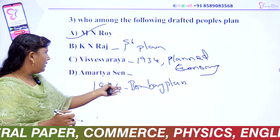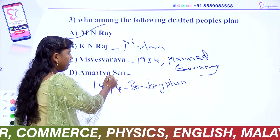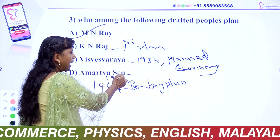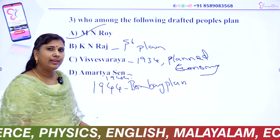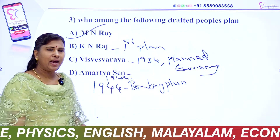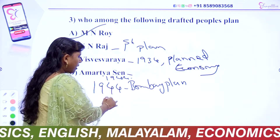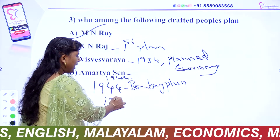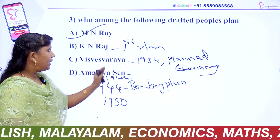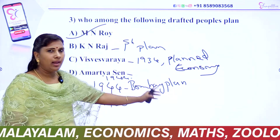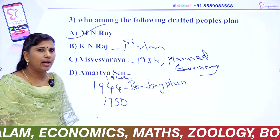The Bombay Plan is the idea of Narayan Agarwal. The plan also relates to the Sarvodaya Plan. There are extra points in this area.